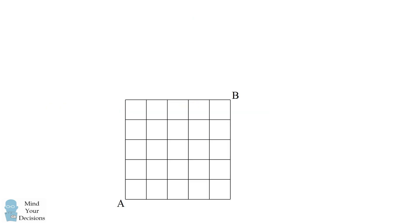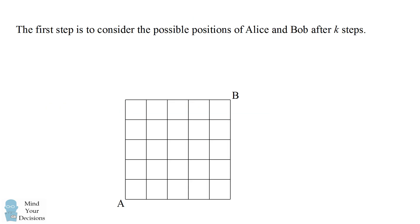We'll get started by considering the possible positions that Alice and Bob can be after k steps. After one step, they're going to be pretty close to their original starting points — they're not going to be able to cross paths. The same thing goes after two steps, three steps, and four steps. But after five steps, it's possible that they could be at the same point at the same time.